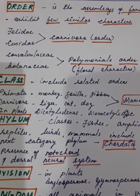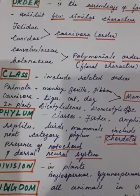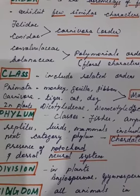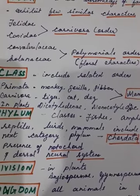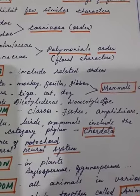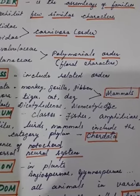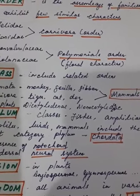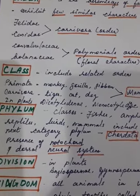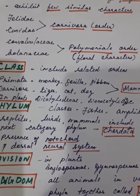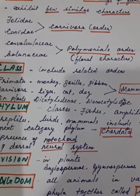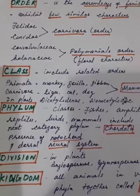In plants, Convolvulaceae and Solanaceae are kept in the order Polemoniales, based on floral characters. The next category or taxon is class, which includes related orders. For example, the order Primate (which includes monkey, gorilla, gibbon) and order Carnivora (which includes tiger, cat, dog) are kept in the same class Mammalia. In plants, there are two classes: Dicotyledon and Monocotyledon, based on the number of cotyledons in the seed.